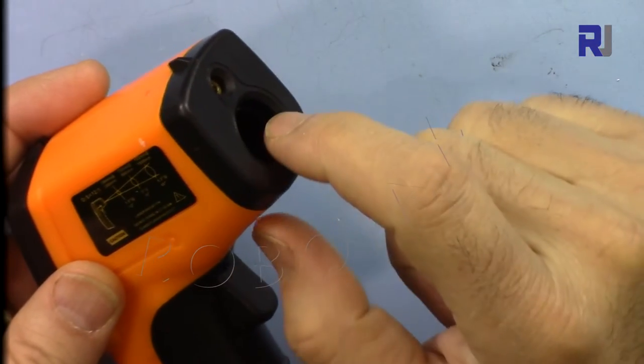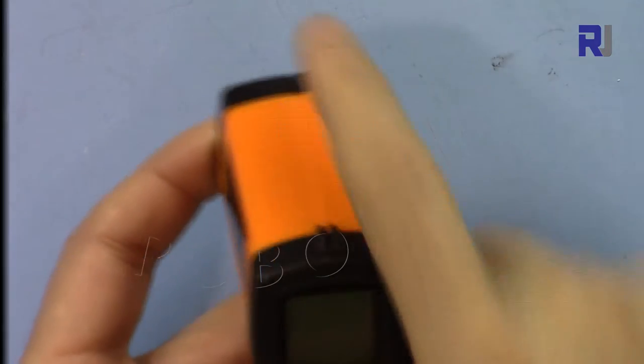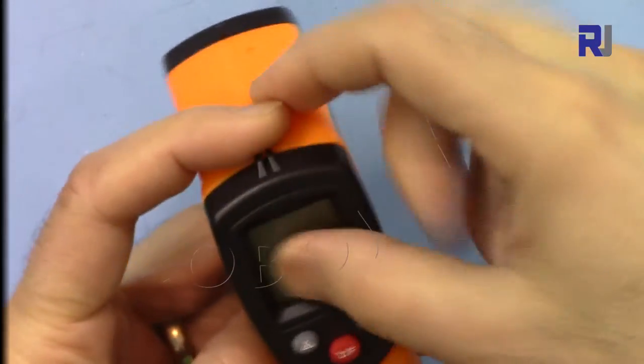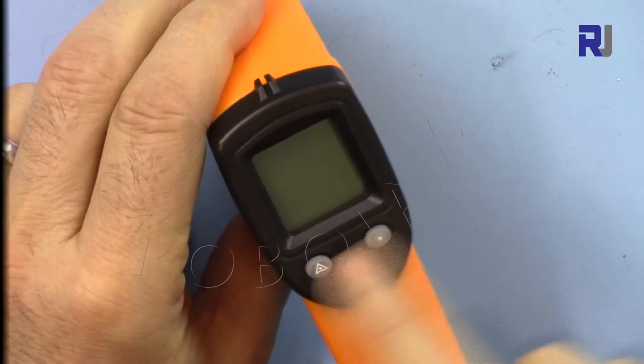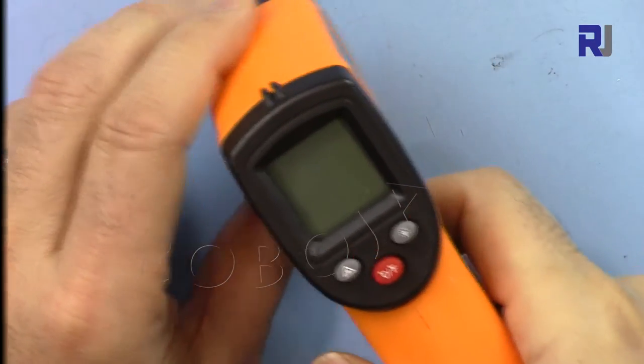We have also here like a gun, we have an aiming point. On this area we have three buttons here. It doesn't need any turn on and off, you just press the trigger and it measures the temperature.